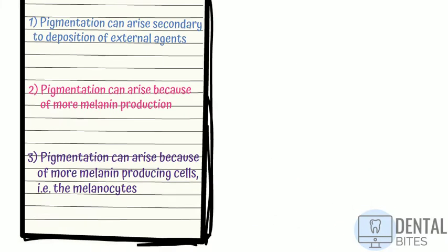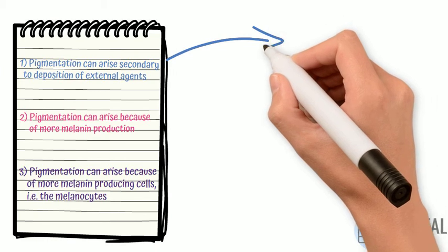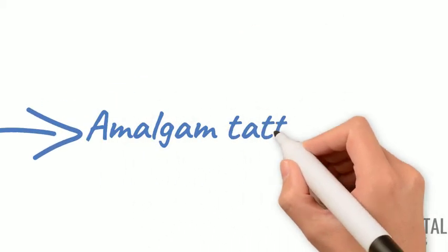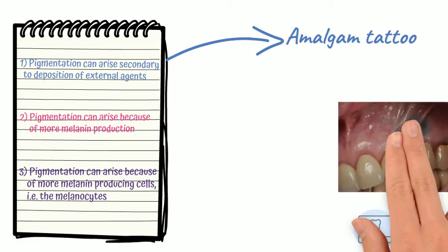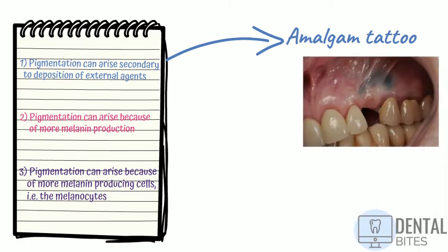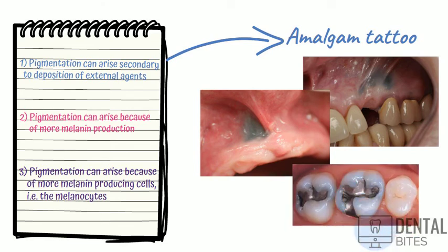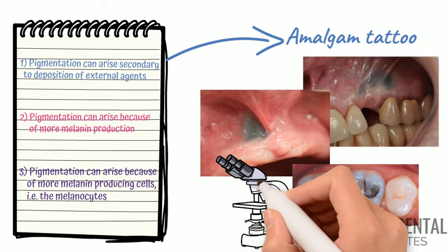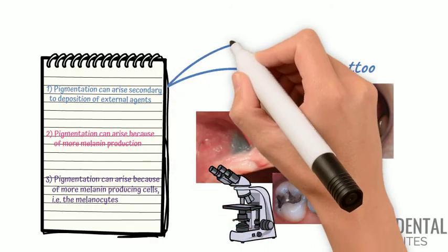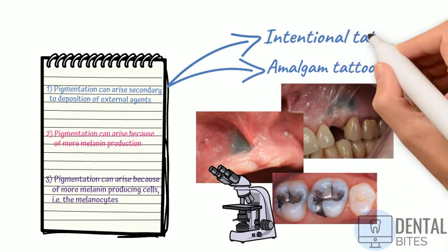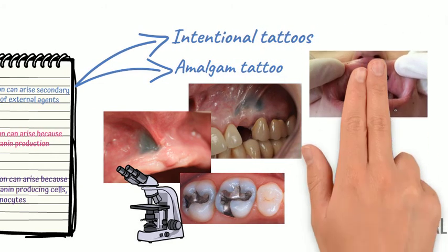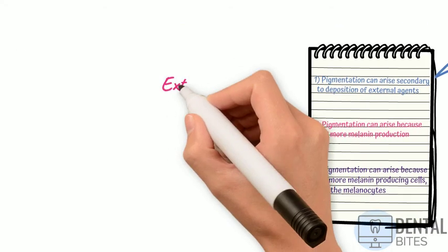In the first category, an example would be an amalgam tattoo. These are the most frequent cause of intraoral pigmentation that you'll typically see. They can appear as a gray or black macule in the mouth and happen because of traumatic implantation of amalgam particles into the soft tissues. This might happen when placing an amalgam restoration, polishing an amalgam, or even during tooth extraction. No treatment is required, and if there is any doubt in the diagnosis, it's important to take a biopsy. Secondly, intentional tattoos can be a cause for pigmented appearance in the mouth.